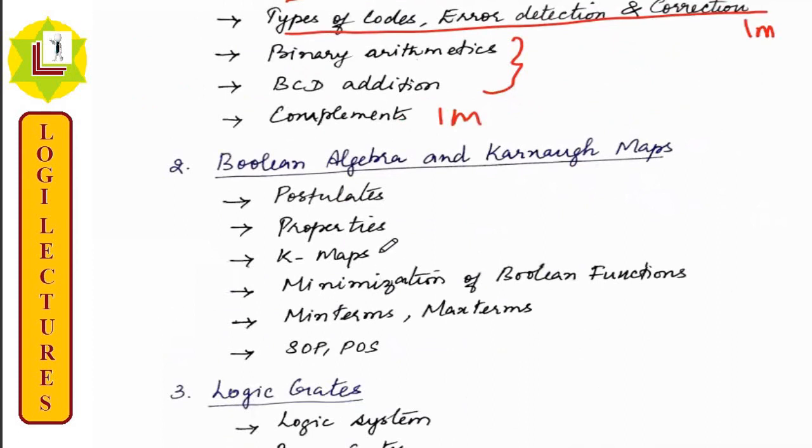This is the second unit. There are postulates, this is one mark. Properties, K-maps, this is one mark. Minimization of Boolean functions. Again, this is one mark.